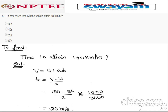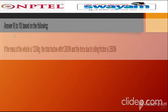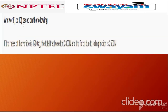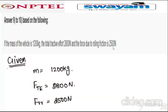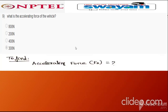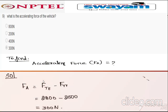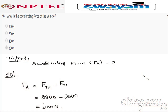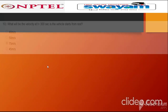Questions nine and ten are based on the following data: mass m = 1200 kg, total tractive effort F_te = 2800 N, and rolling friction force F_rr = 2500 N. Question nine: what is the accelerating force? F_a = F_te − F_rr = 2800 − 2500 = 300 N. The correct answer is option four.